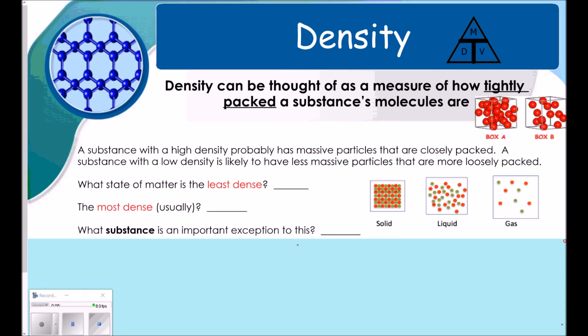Density can be thought of as a measure of how tightly packed a substance's molecules are. So, box A would be more dense than box B. A substance with a high density probably has massive particles that are closely packed. A substance with a low density is likely to have less massive particles that are more loosely packed.